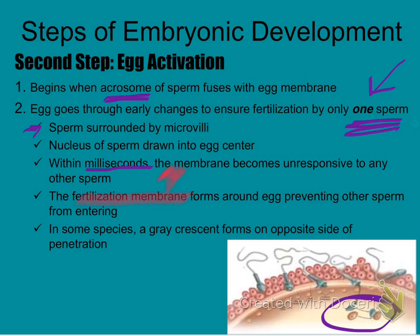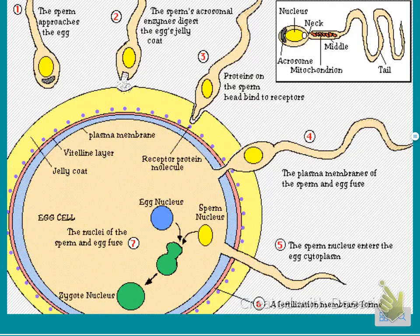In some species, there's also something called a gray crescent that forms on the opposite side of penetration by the sperm cell. Here's a visual of what fertilization looks like step by step, and we will be sketching this in class so you know the different parts of fertilization.